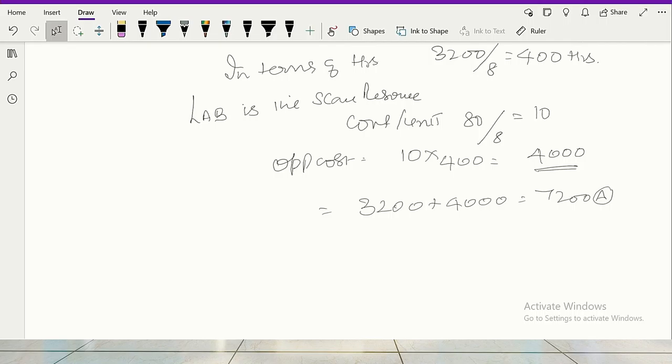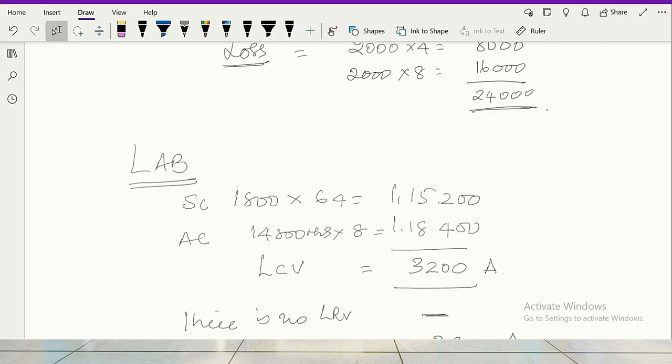Now the second situation we have got is labor is the key factor. When labor is the key factor, how do you go about it? It is simply like material only. We are only interested in variable cost. Material, labor, variable overhead behave in the same fashion. So when you are going to labor, same manner, 1800 into 64, 1,15,200. I am speaking slowly.